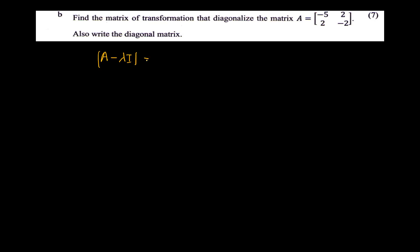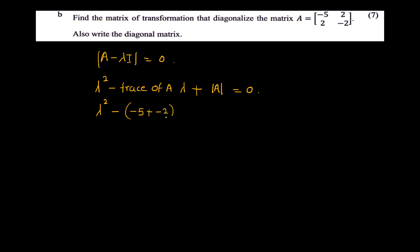The characteristic equation: A minus lambda I equal to 0. That gives lambda squared minus trace of A times lambda plus determinant of A equal to 0. The diagonal elements give trace as minus 5 plus minus 2.